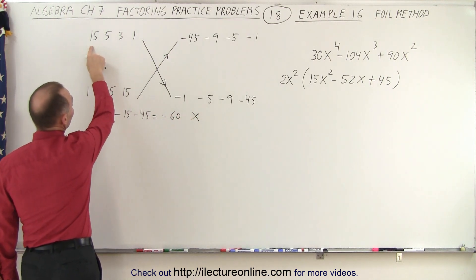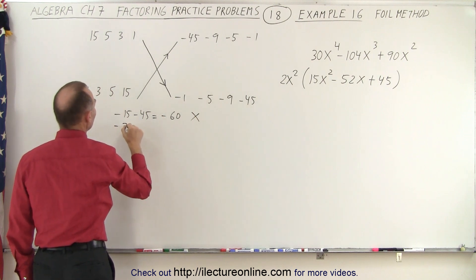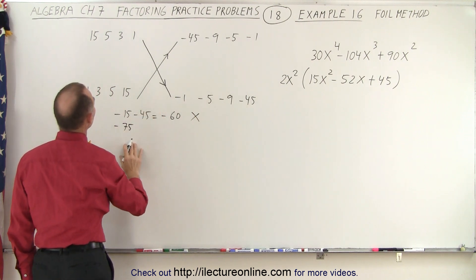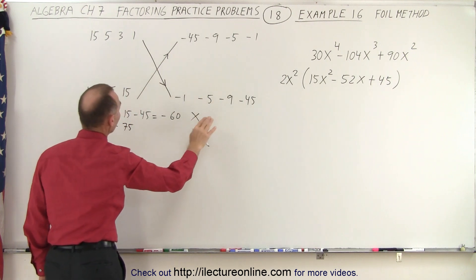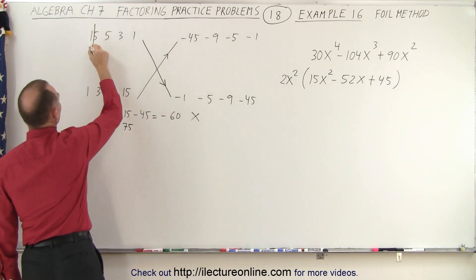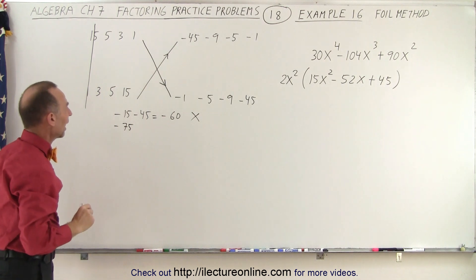How about 15 times negative 5, that's negative 75, so that's already too big. How about 15 times negative 9, well that's definitely too big. So it looks like that's not a good combination, we can get rid of that.